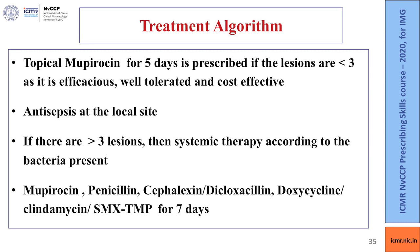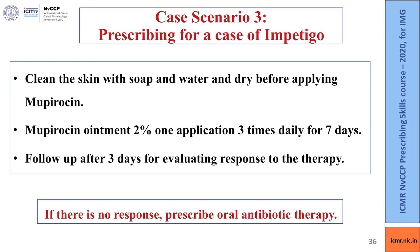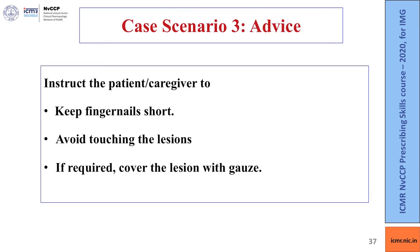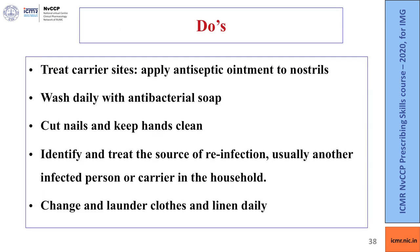Systemic options also include doxycycline, clindamycin, and sulfamethoxazole-trimethoprim for seven days. Clean the skin with soap and water and dry before applying mupirocin. Mupirocin ointment 2%, one application three times daily for seven days. Follow up after three days to evaluate the response. If no response, prescribe oral antibiotic therapy. Instructions: keep fingernails short, avoid touching lesions, keep them covered with gauze if possible, treat carrier sites, apply antiseptic ointment to nostrils, wash daily with antibacterial soap, and keep hands clean.